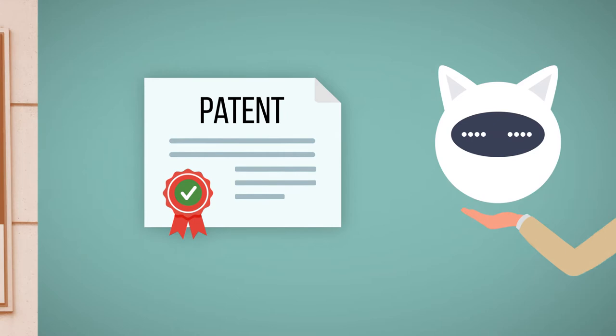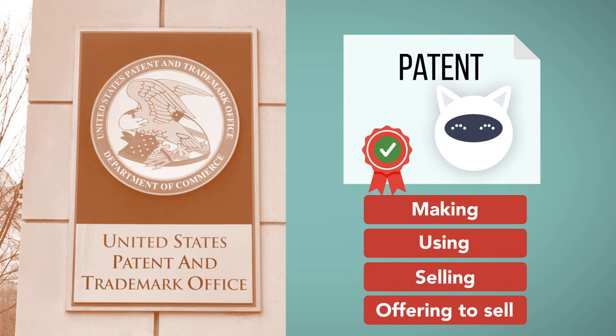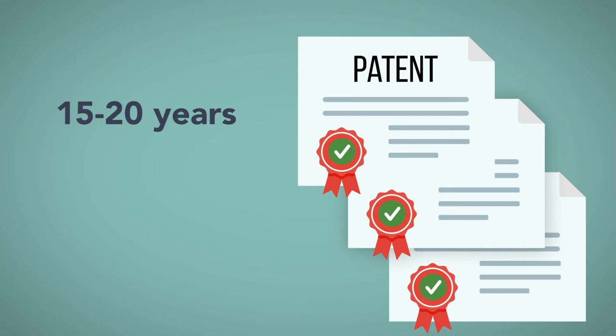A patent is a form of intellectual property that applies to inventions. Patents are issued by the United States Patent and Trademark Office, and they provide the owner with the right to exclude others from making, using, selling, or offering to sell the inventions described in the patent. Depending on the type of patent, this right to exclude lasts for 15 to 20 years.